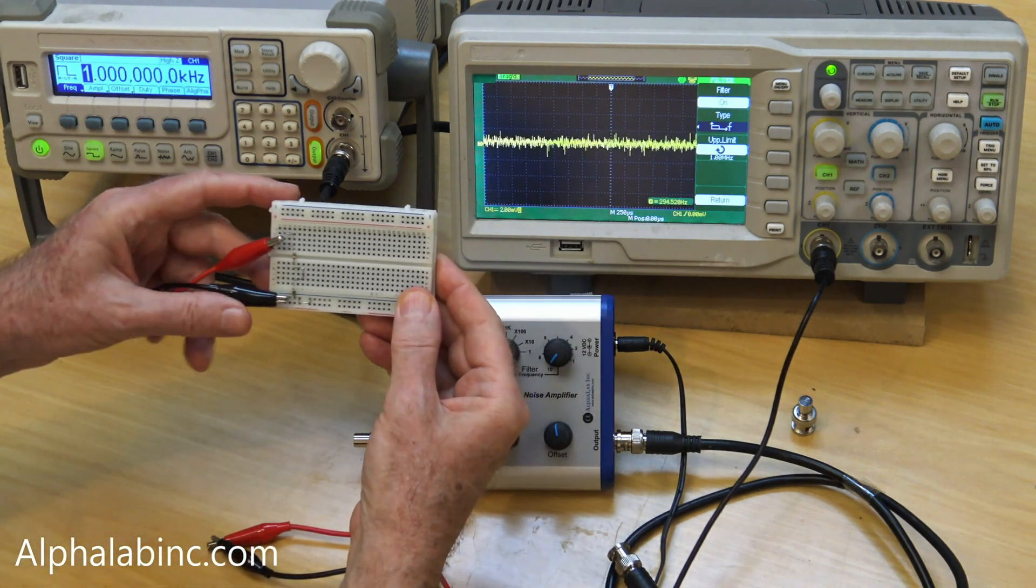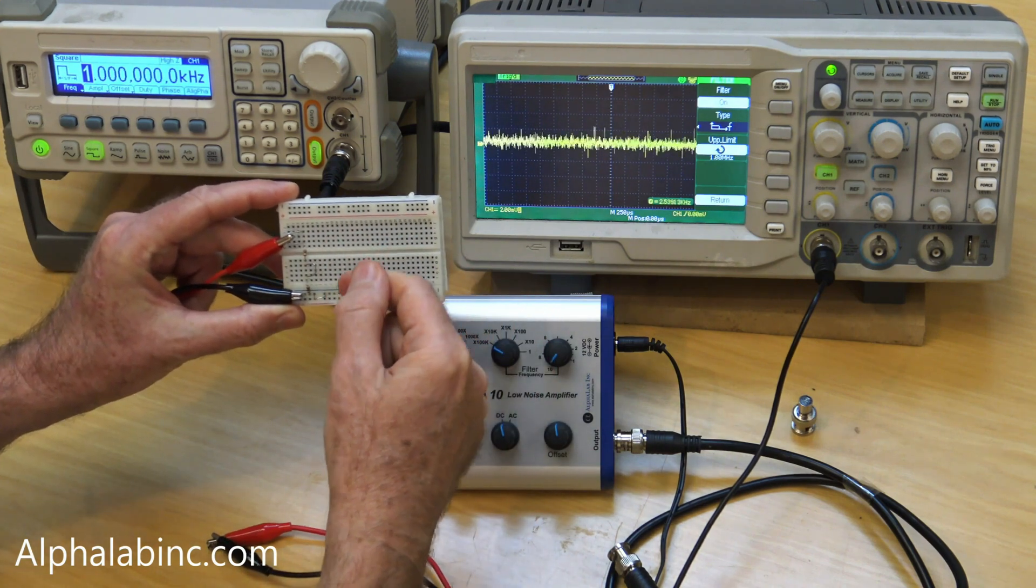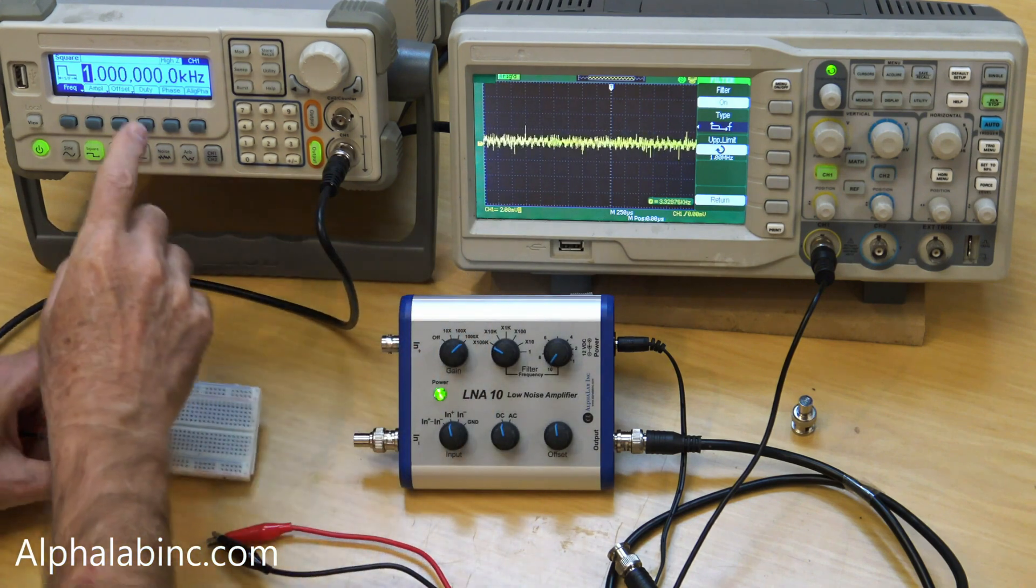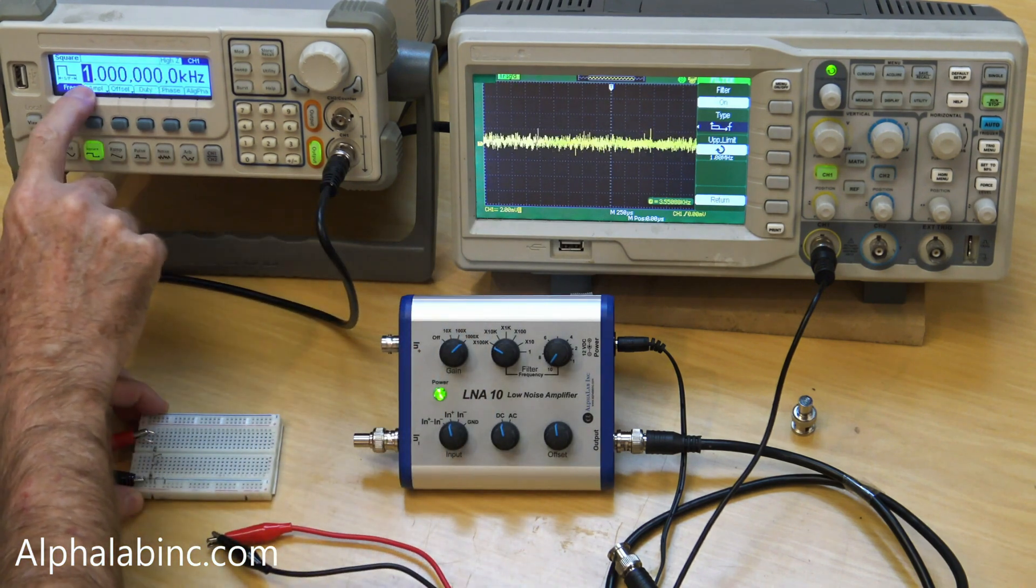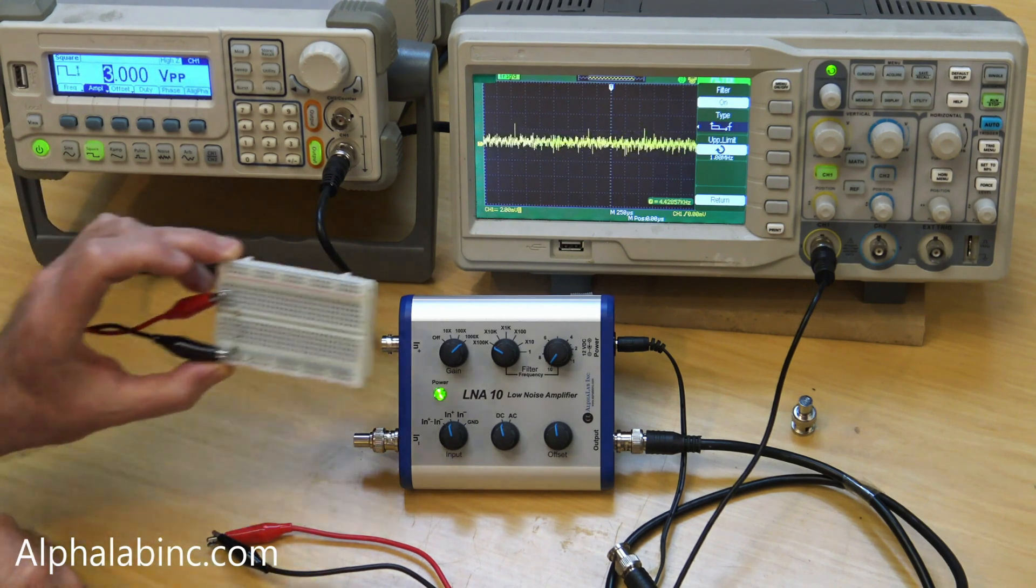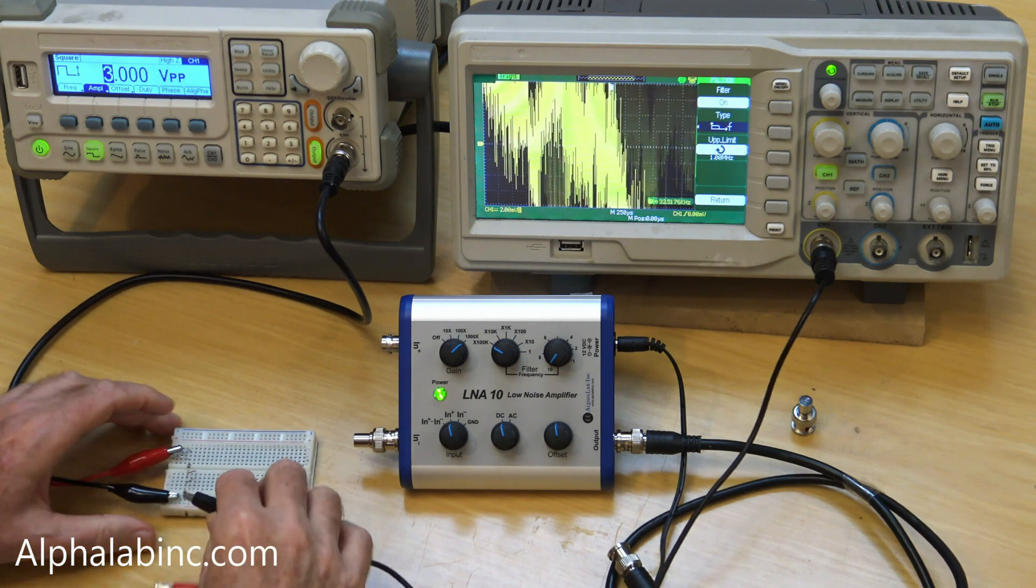Here's a simple breadboard. It's a 1000 to 1 voltage divider. It's just a 10,000 ohm resistor in series with a 10 ohm resistor. It's connected to a signal generator that's a 1 kilohertz square wave at 3 volts peak to peak. I'll use this to produce smaller signals than the signal generator can produce directly.